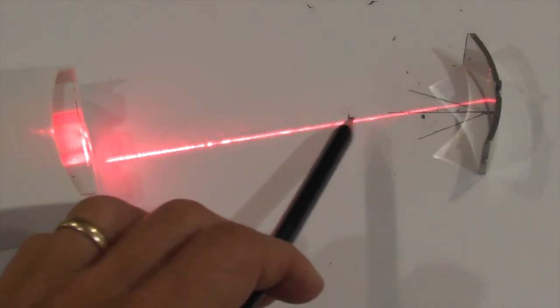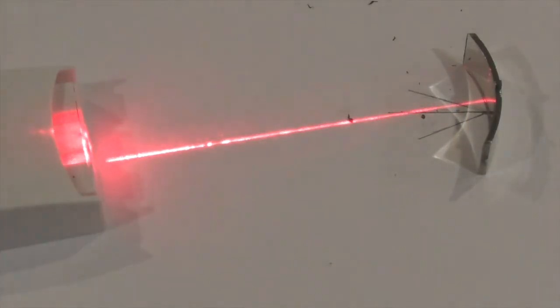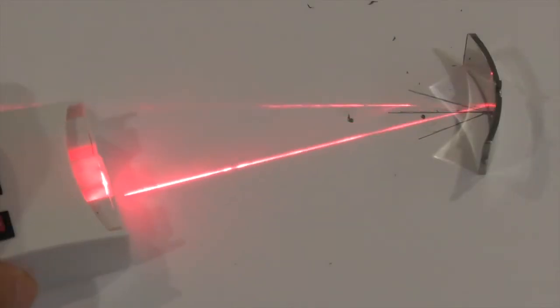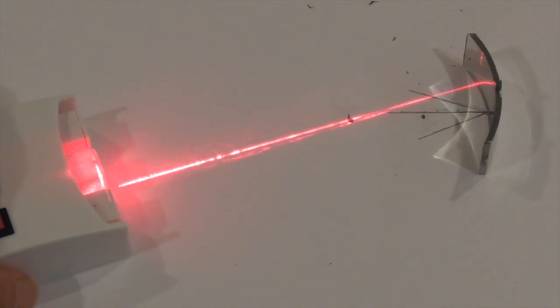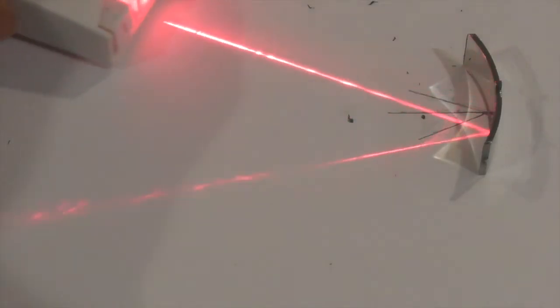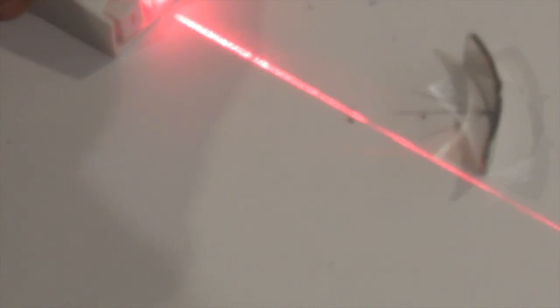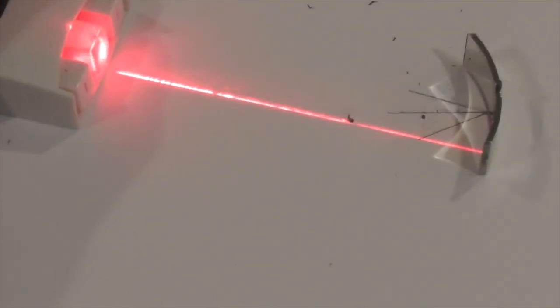So the angle of incidence will equal the angle of reflection regardless of angle. See as I change the angle, notice how as it goes to the center of curvature that it reflects directly back. Oops I missed it there. Which I find kind of interesting.